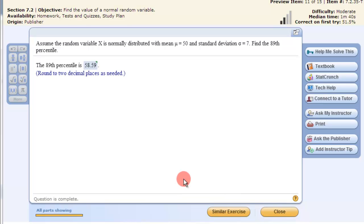In this video we'll look at finding the normal value that corresponds to an area that's given or to a percentile. For this example, assume the random variable x is normally distributed with a mean of 50 and a standard deviation of 7. Find the 89th percentile.